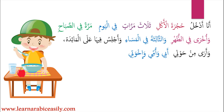قد صفوا — they had gathered, or they had lined up. قد here indicates a past participle: 'they have gathered' or 'they have lined up.' حول المائدة — around the dining table. So the full phrase means they have gathered around the dining table.